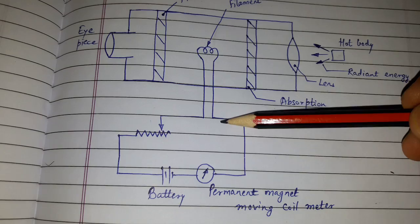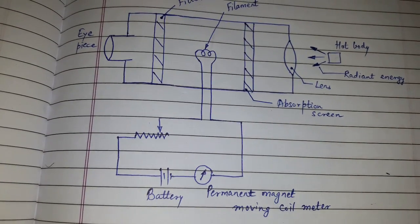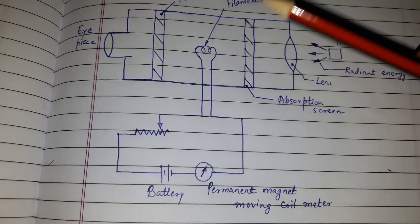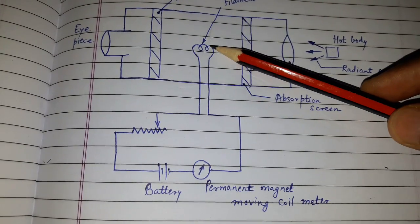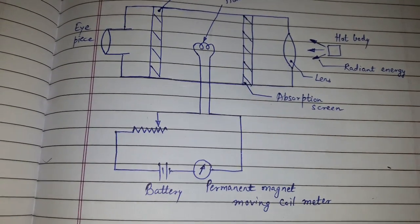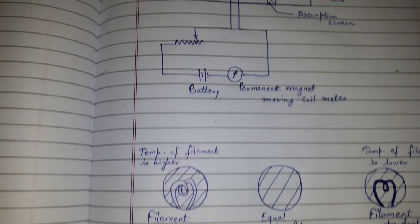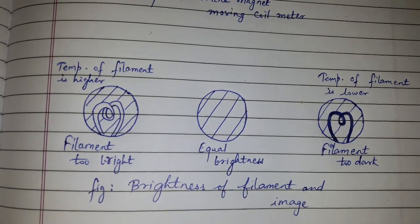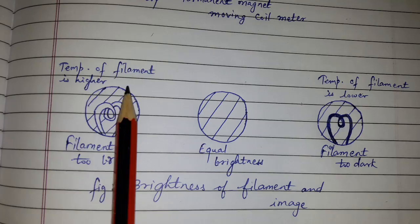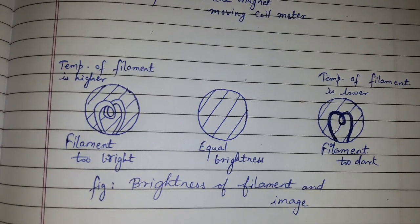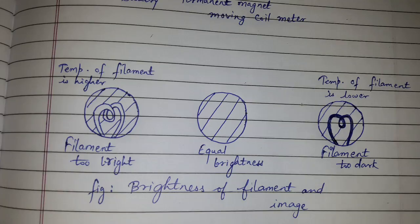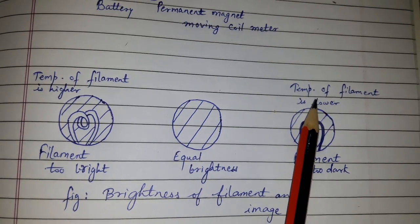The current in the filament is adjusted so that the brightness of the filament and the image become equal. Here you will be more clear. First, if the temperature of the filament is higher then the filament will appear too bright. If the temperature of the filament is low, then the filament will be too dark.